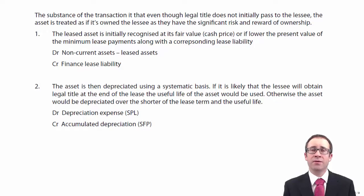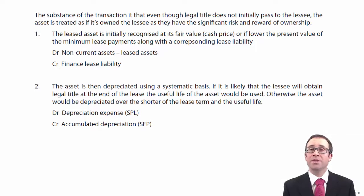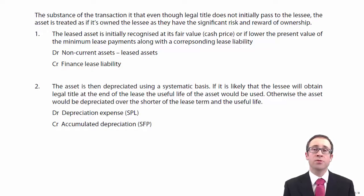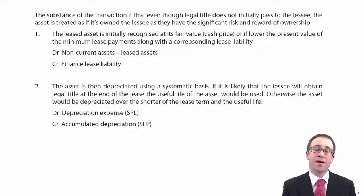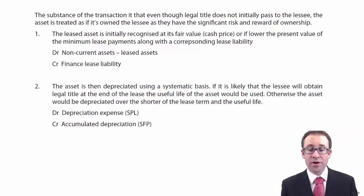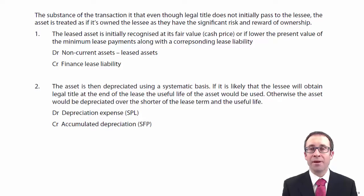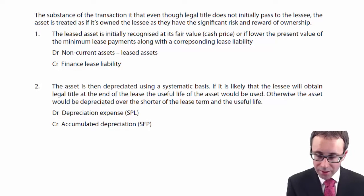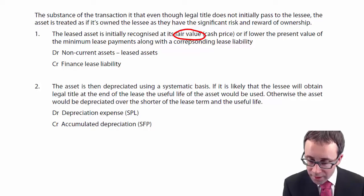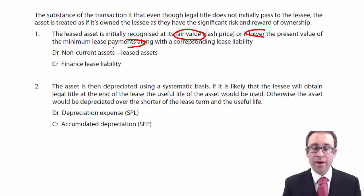When we look at the accounting steps, there are four steps we need to go through. The first is capitalising the asset. In substance, we have control of the asset, so it is our asset in substance. We recognise it on the statement of financial position and we recognise a corresponding liability — the finance lease payable. We debit our non-current assets under leased assets and credit the finance lease liability. The key numerical aspect is that we recognise it at its fair value, or if lower, the present value of the minimum lease payments.